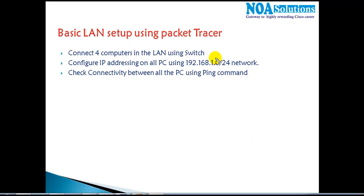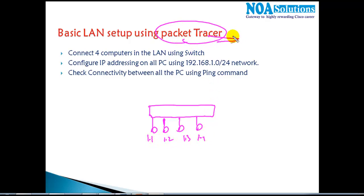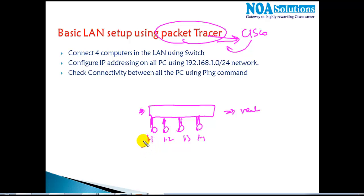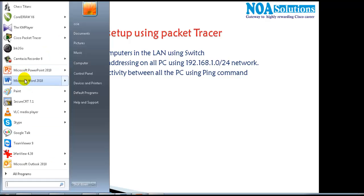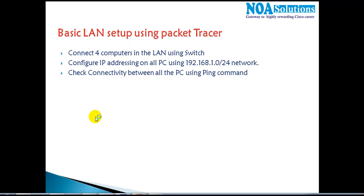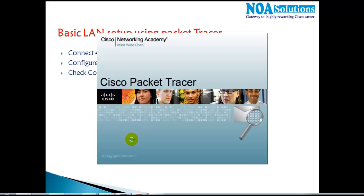To implement this lab I could use a physical switch with four computers connected via straight cables and then assign IP addresses. But here I'm going to show everything on a simulation tool called Cisco Packet Tracer. It's a Cisco program that allows you to simulate real Cisco routers and switches. It's a very good tool for simulating labs and is used in the Cisco Network Academy for major trainings.